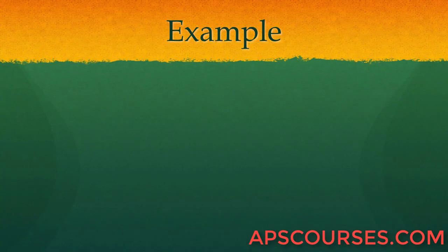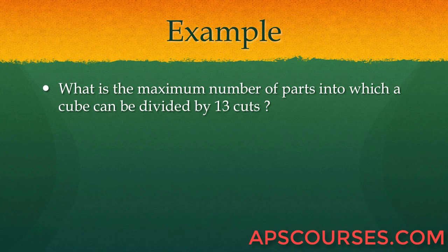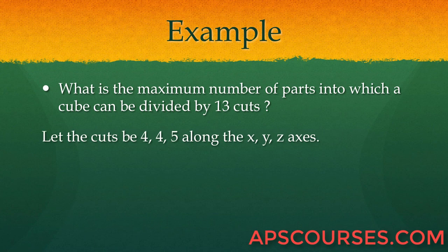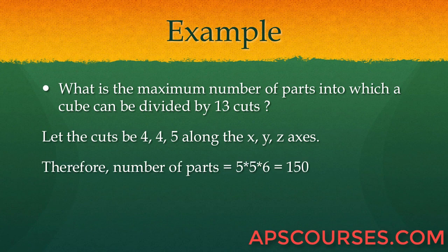Next example: What is the maximum number of parts into which a cube can be divided by 13 cuts? We let the cuts be 4, 4, and 5 along the x, y, and z axes. Using the formula (x+1)(y+1)(z+1), the total number of parts is 150.